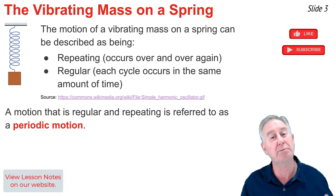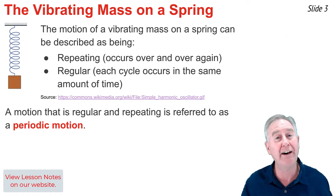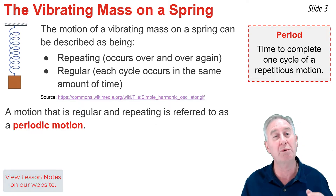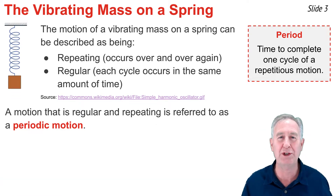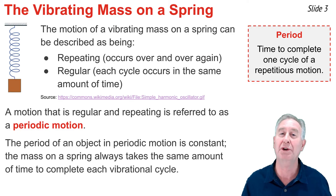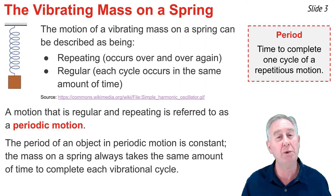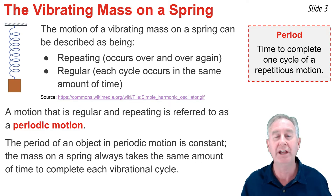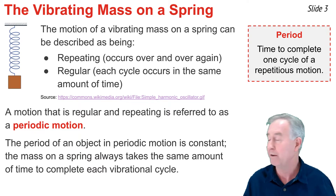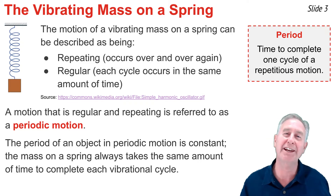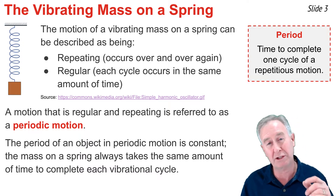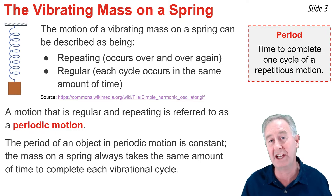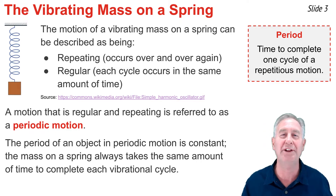In the phrase 'periodic motion,' you hear the word period — a physics term which means the amount of time that it takes to complete one full cycle of vibration. Any object that's undergoing periodic motion always takes the same amount of time to complete each consecutive cycle. Its period is constant. For this mass on the spring, if it takes 2.5 seconds to complete its first cycle, then it takes 2.5 seconds to complete its fifth cycle, and its ninth cycle, and so on.